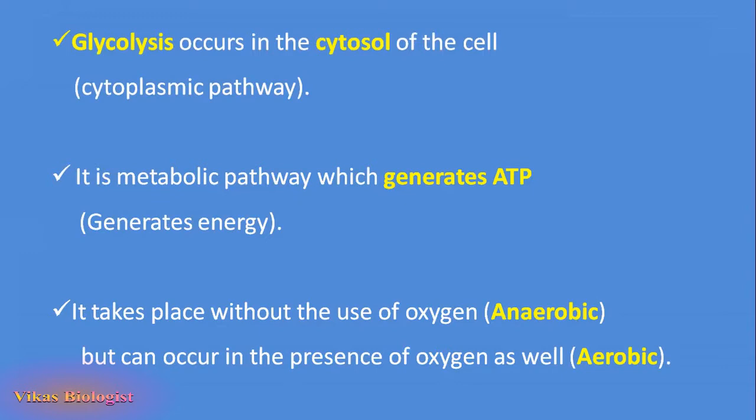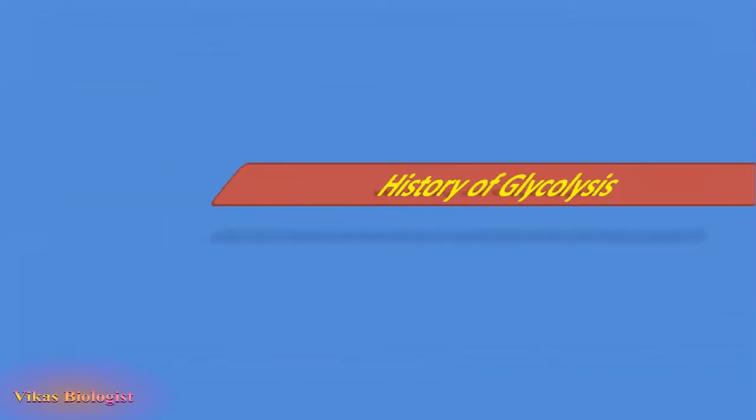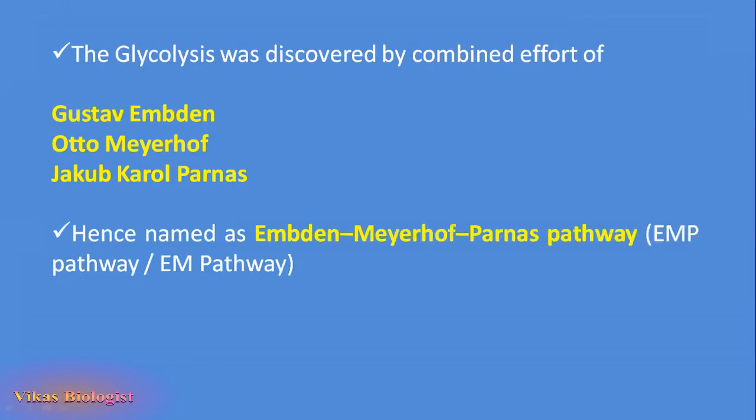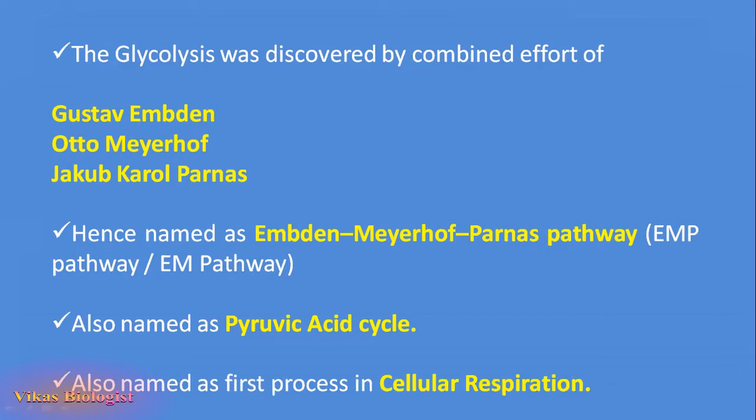Looking into the history of glycolysis, it was discovered by the combined effort of Gustav Emden, Otto Meierhoff, and Jacob Carroll Paranas. Hence the name Emden-Meierhoff-Paranas pathway has come into existence. This glycolysis pathway is also called the EMP pathway or EM pathway. It is also named the pyruvic acid cycle because pyruvic acid is the end product of the glycolysis pathway. It is also named as the first process in cellular respiration.